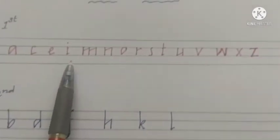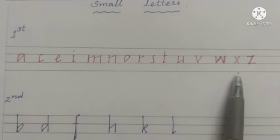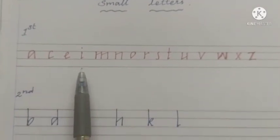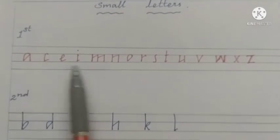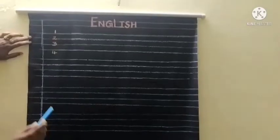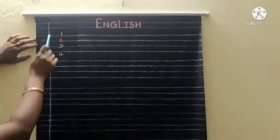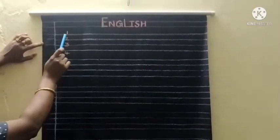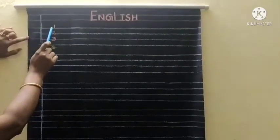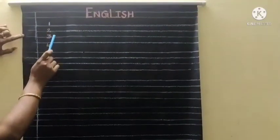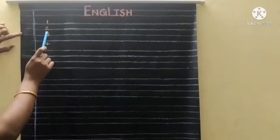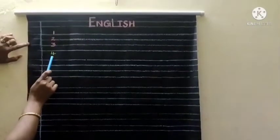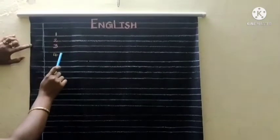In the middle line letters, we have 15 letters. Today we are going to study how to write the middle line letters, A to O. First we are going to study those lines: first line, second line, third line, fourth line. First line is called top line. Second line and third line are called middle lines. Fourth line is called bottom line.